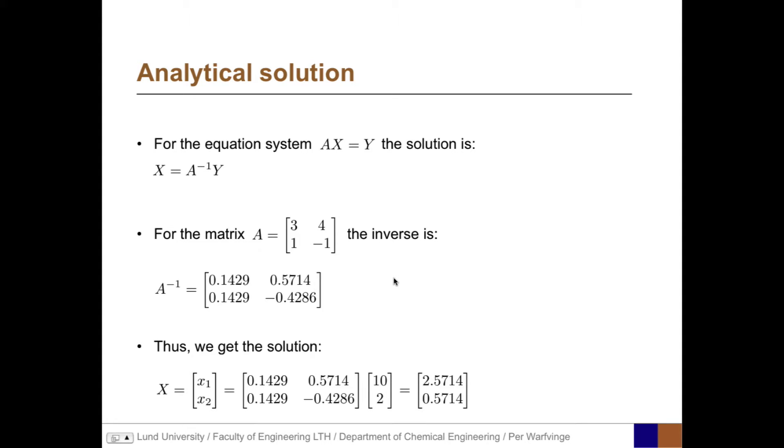Thus, we get the solution x, that is x1 and x2, equals the inverse of A times y, and that equals, for x1, 2.5714, and for x2, 0.5714. Here we also see the linear nature of linear systems.